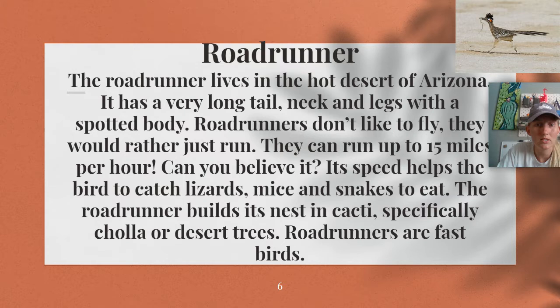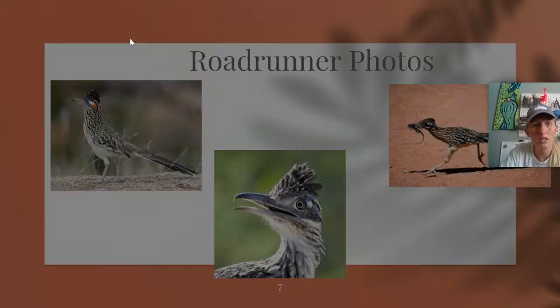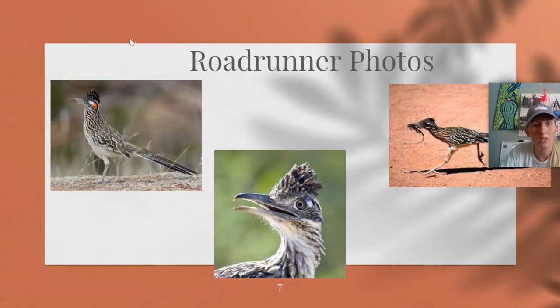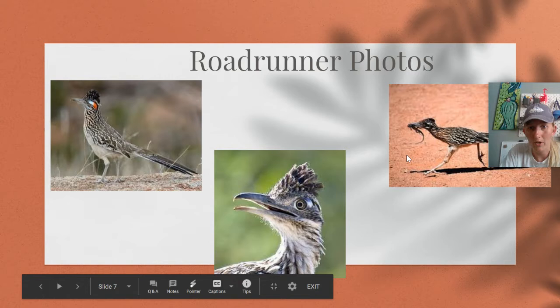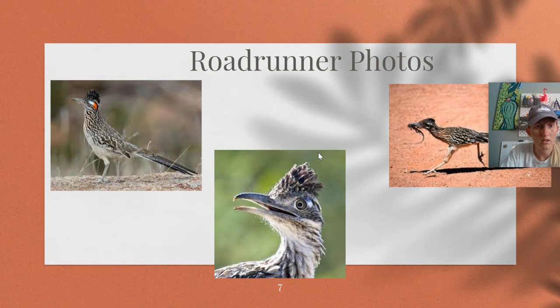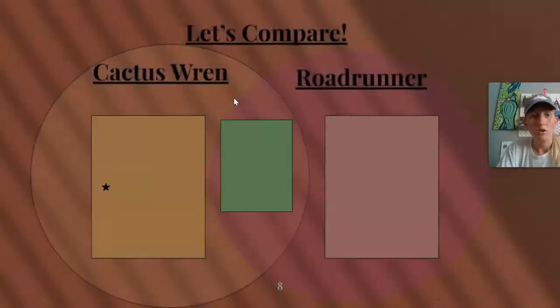There are some commonalities between the roadrunner and the cactus wren so we're going to take a look at those. Here are a couple of pictures — you can see the roadrunner with his feathery head and right here you can see he's got a lizard in his mouth. They are very fast and can catch up to their prey, which includes mice, rodents, and different things too.